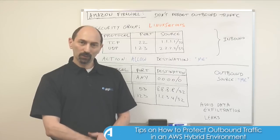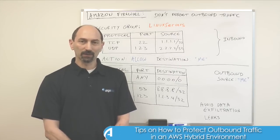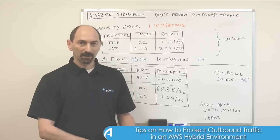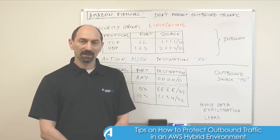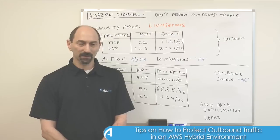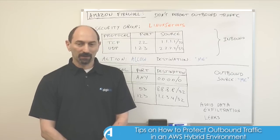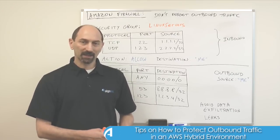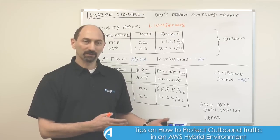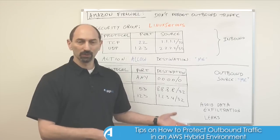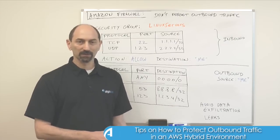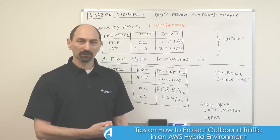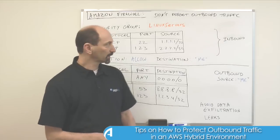So you have your cloud environment, you're using your AWS estate to process data in your production systems. And if you attended the last class, you saw that the way to do it is to use the Amazon security groups to provide filtering for the traffic allowed into those servers.